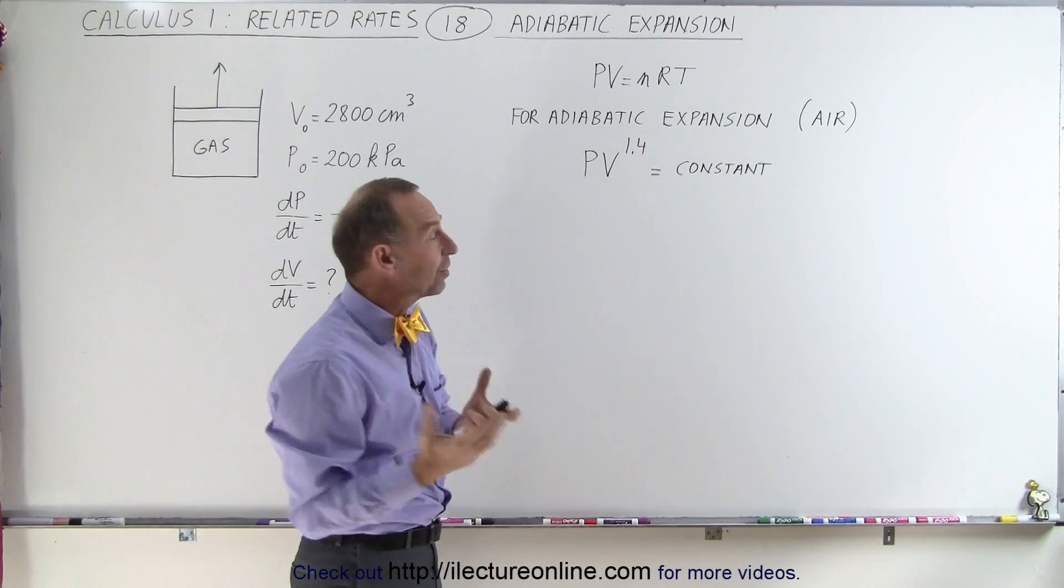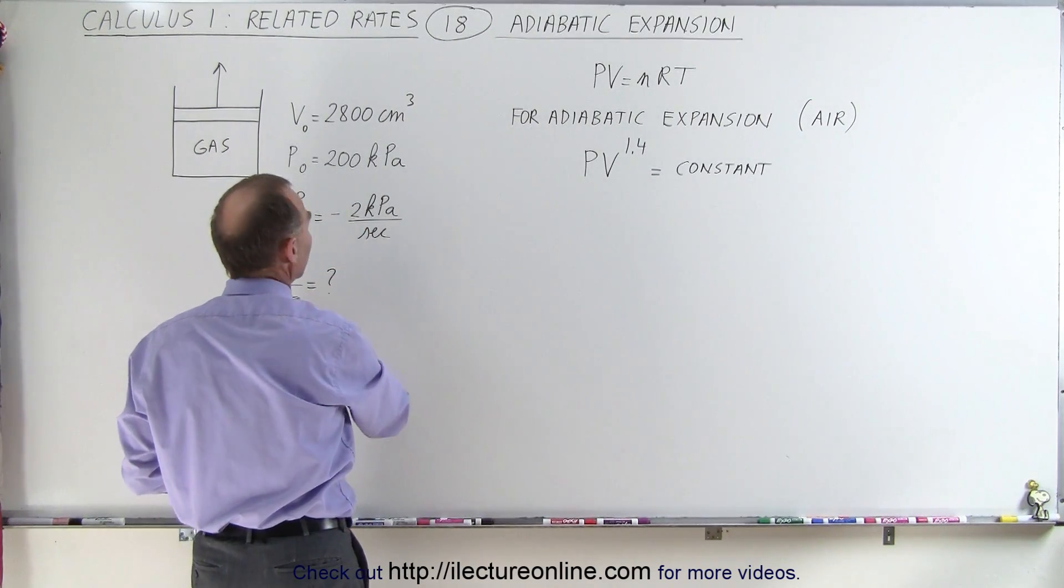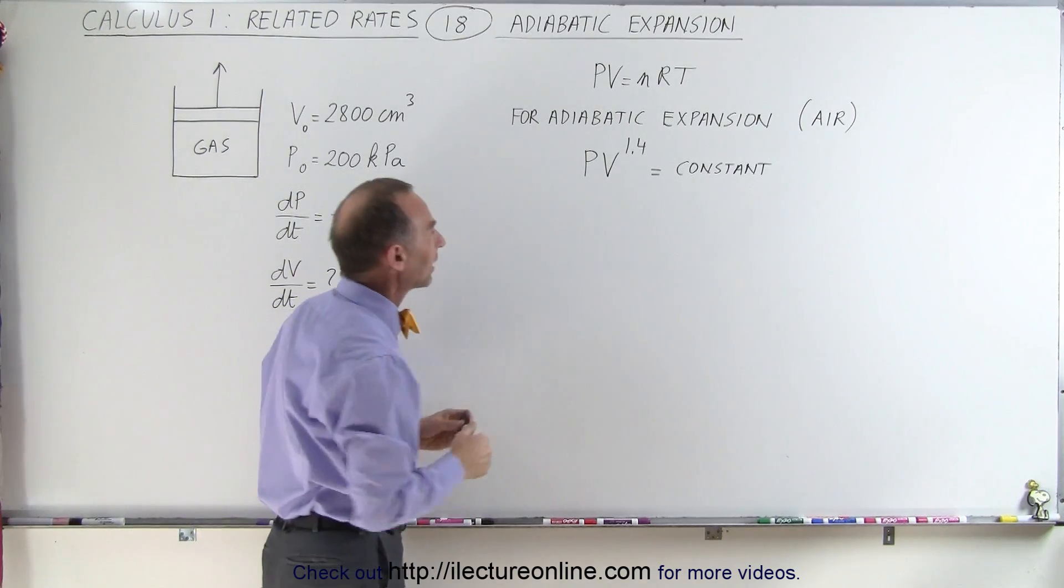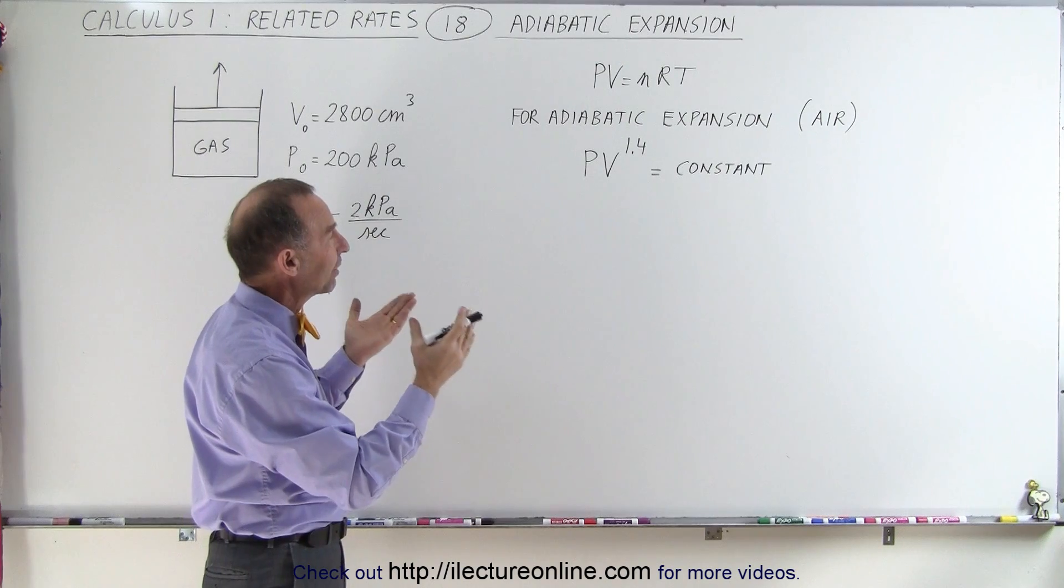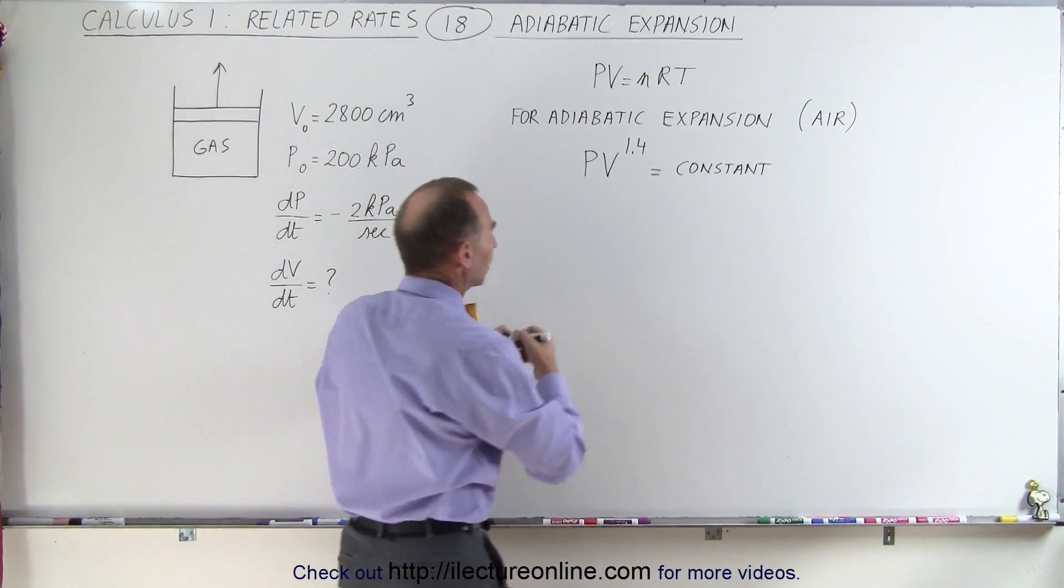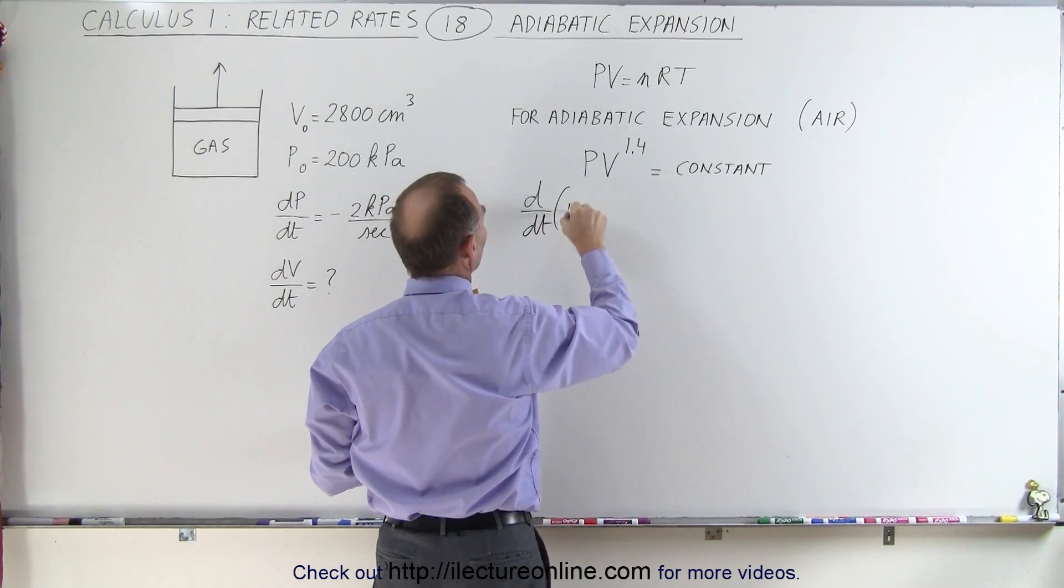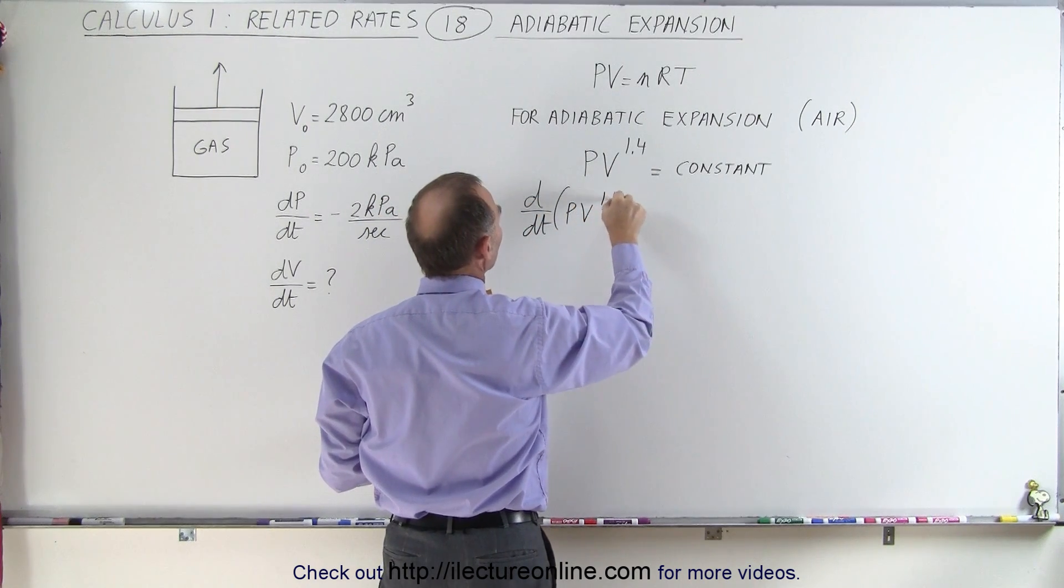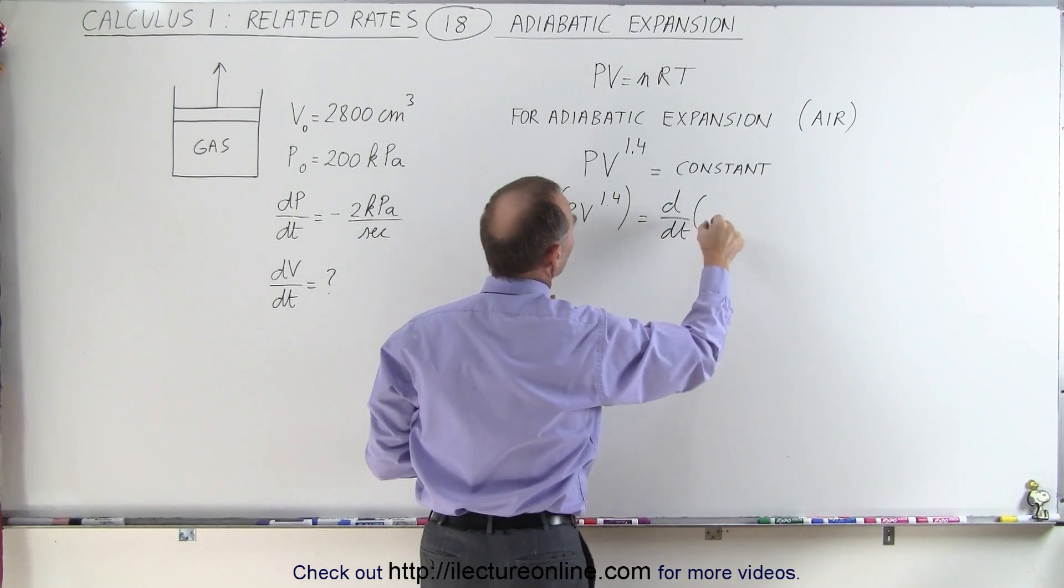If that's true, we can use that equation to try to find the rate of change of volume with respect to time for an adiabatic expansion. What we're going to do here is take the derivative of that equation on both sides with respect to time. So we get d/dt of P times V to the 1.4 power equals the d/dt of a constant.